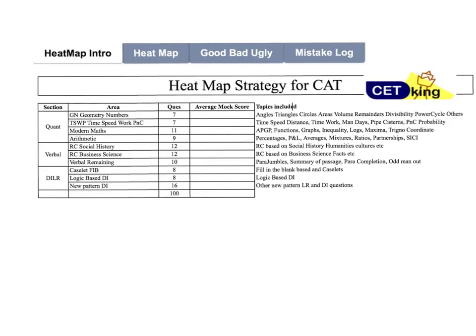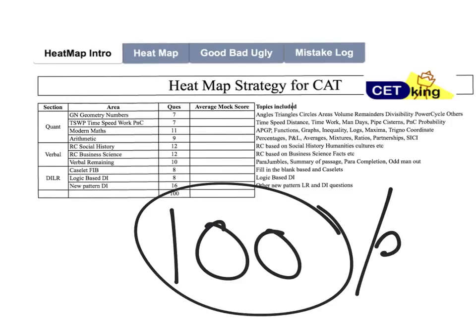Hi guys. I personally feel the preparation for the CAT IOM chart starts after you begin scoring more than 100 marks in your mocks. So out of a 300 mark paper for CAT, scoring 100 marks should be the first target to achieve. If you are able to achieve that target, this video is for you. This means you've already done the first half, you have a good IQ level, and you are in line for the IOMs.